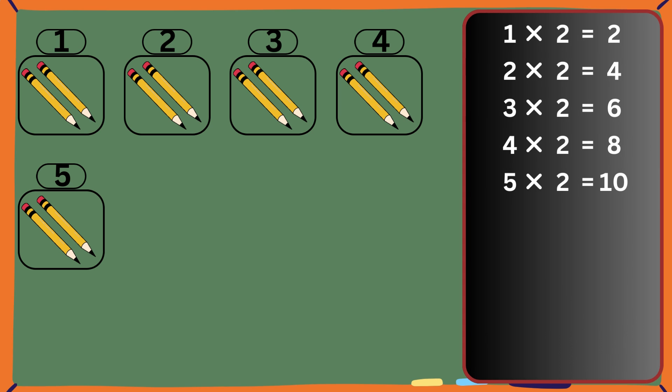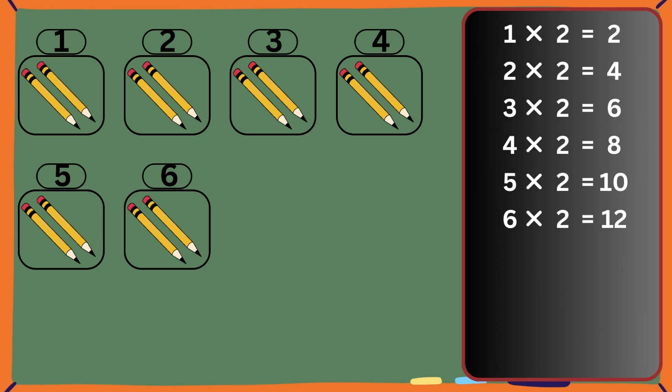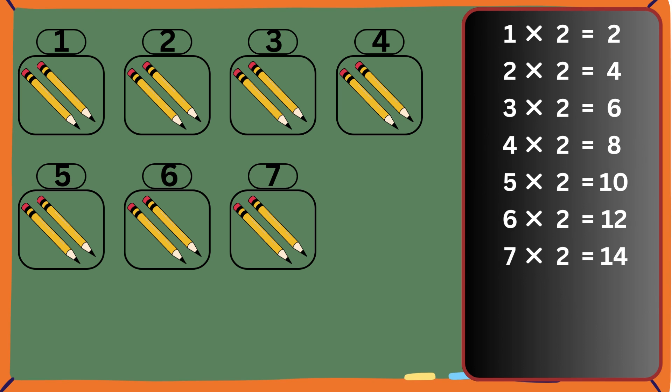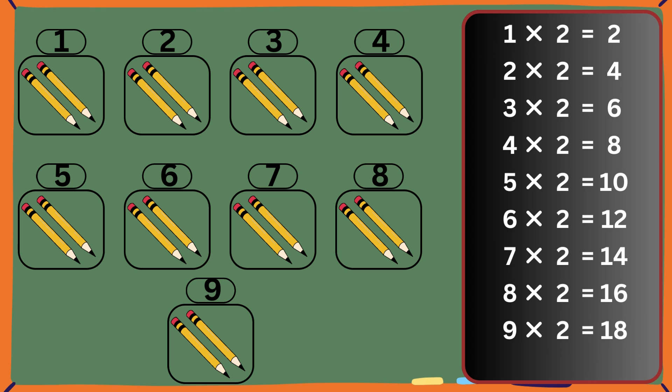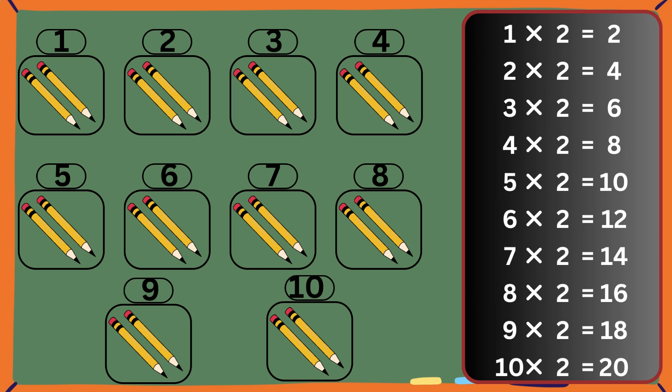Five twos are ten. Six twos are twelve. Seven twos are fourteen. Eight twos are sixteen. Nine twos are eighteen. Ten twos are twenty.